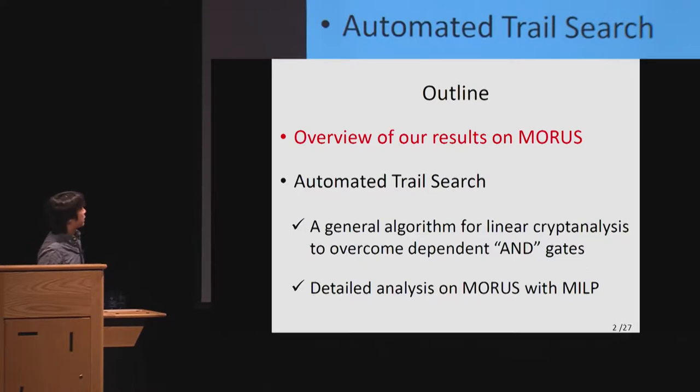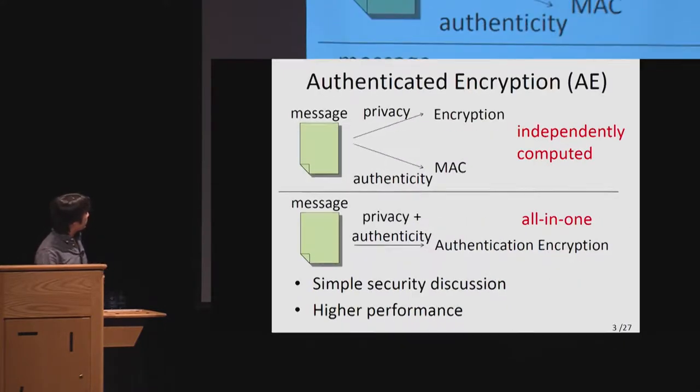First I'd like to give an overview of our results without mentioning technical details. The second part is technical details, which is automated trail search. To do it we have to solve some problems, and we propose a way to solve the problem which is particular to ciphers which use AND gates for the source of nonlinearity. In the third part, I give some detailed analysis on MORUS.